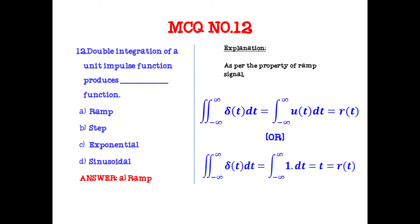Double integration of the unit impulse function produces which function? It is nothing but the ramp function. Double integration with respect to δ(t) dt equals the single integration of u(t) dt, which equals r(t).